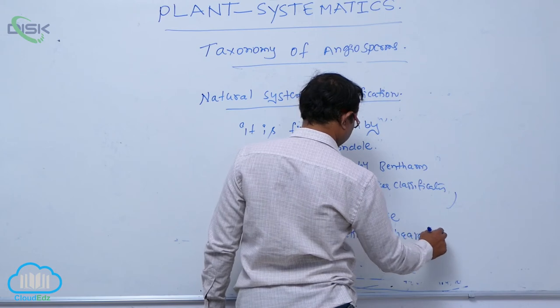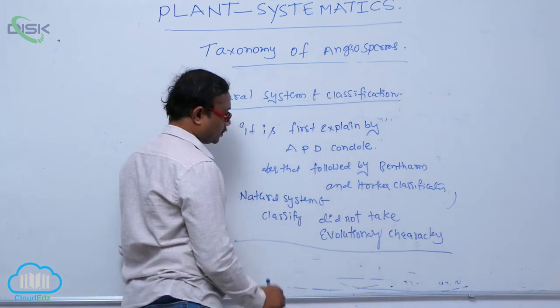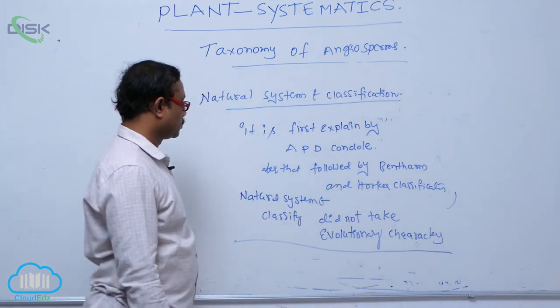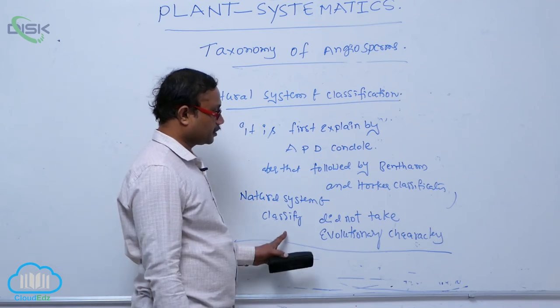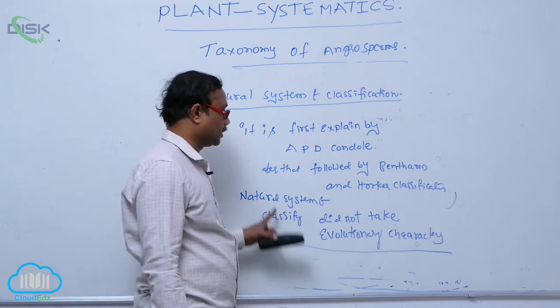That is objectively important. What is the demerit of natural system of classification? It did not take that evolutionary characters for classifying of the plants.